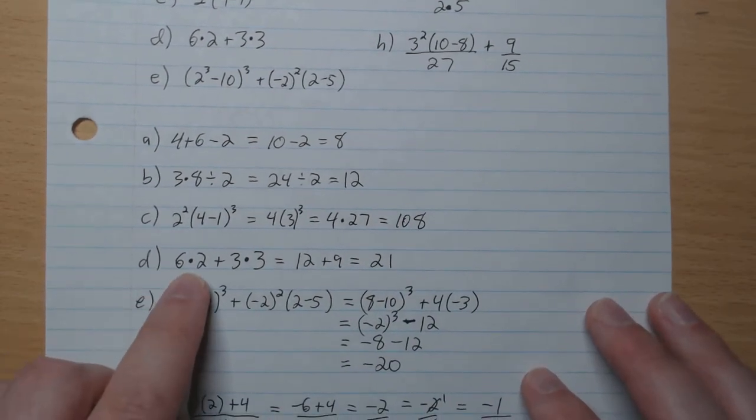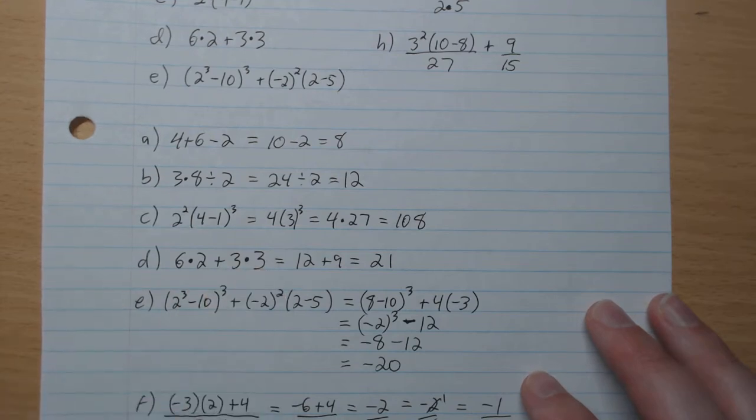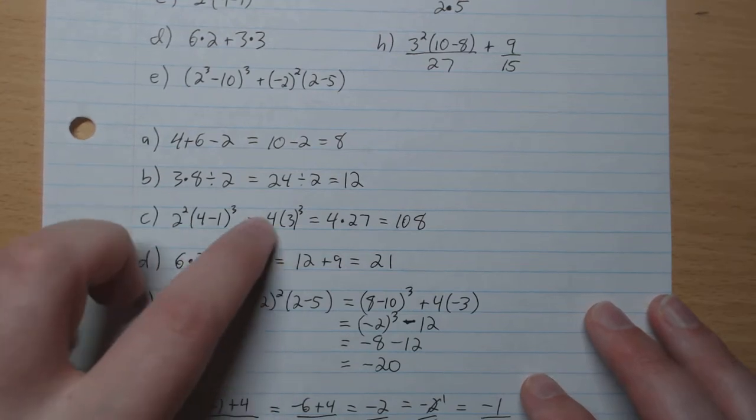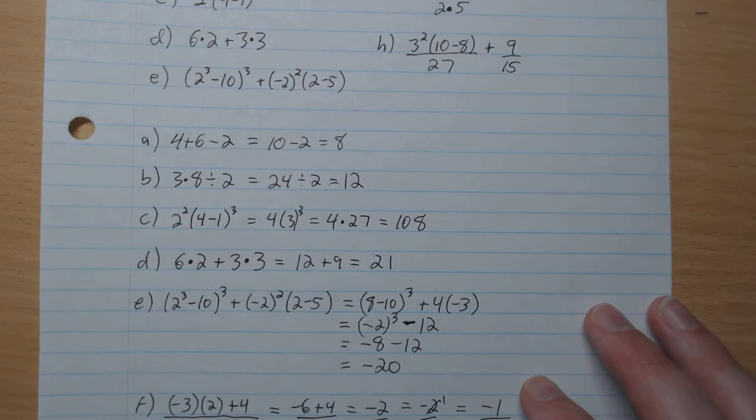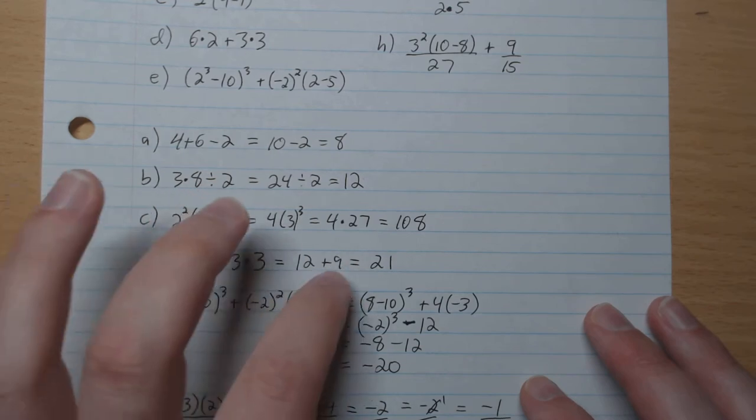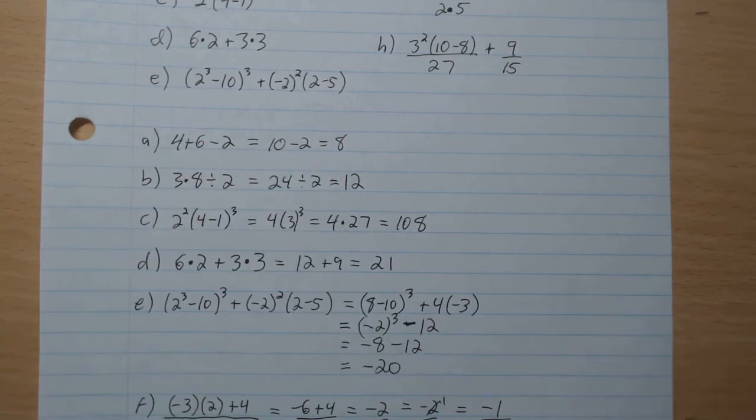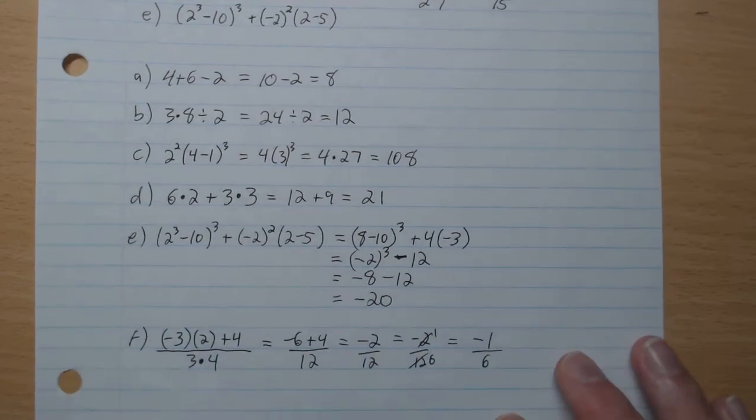D. 6 times 2 plus 3 times 3. So BEDMAS. So multiplications come first. So 6 times 2, 12. 3 times 3, 9. Add them up. 21.